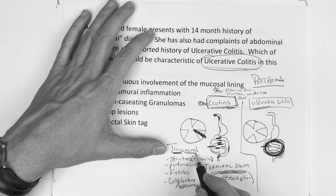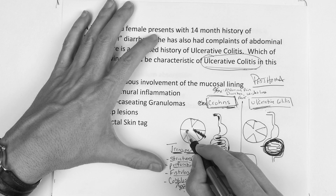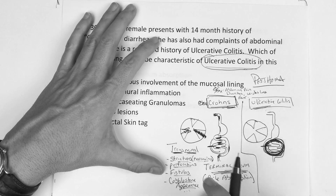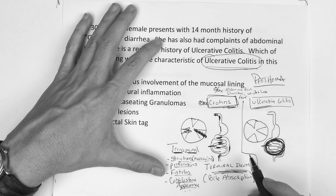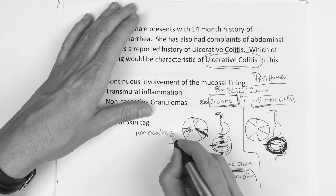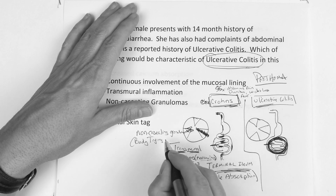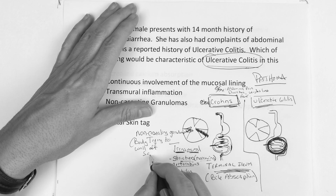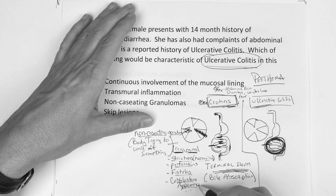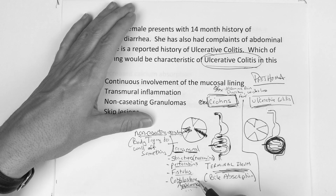Crohn's has all these features: transmural inflammation, strictures, narrowing, perforations, fistulas, and cobblestone appearance. The cobblestone appearance comes because the good pieces of tissue kind of overlap when inflammation goes transmural. It's also associated with the term non-caseating granuloma — essentially the body is trying to wall off something it doesn't like. So all these key terms are associated with Crohn's: non-caseating granuloma, transmural inflammation, strictures, perforations, fistulas, cobblestone appearance.